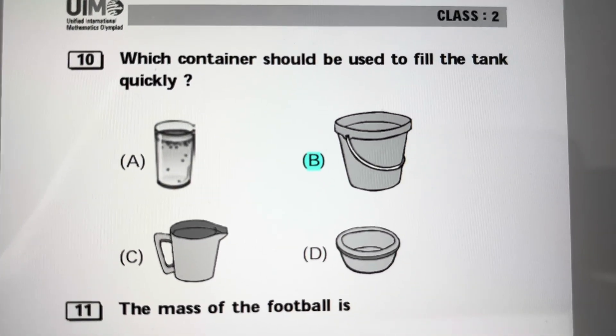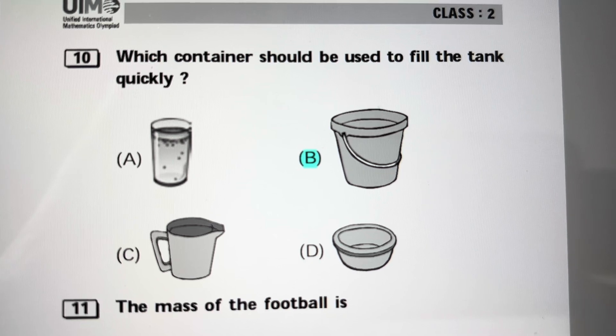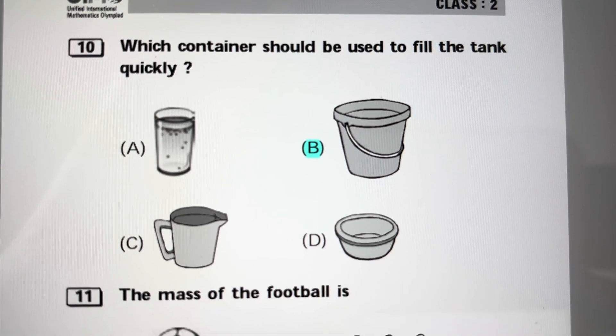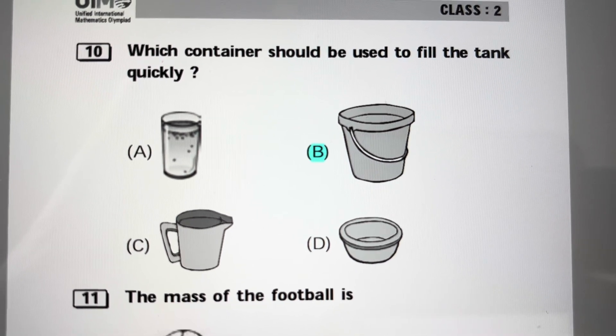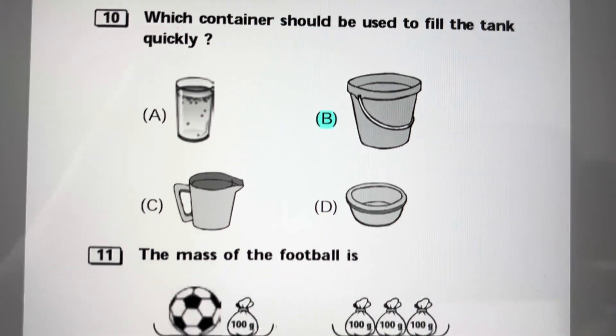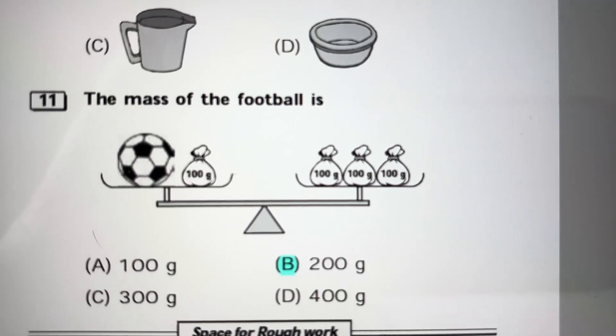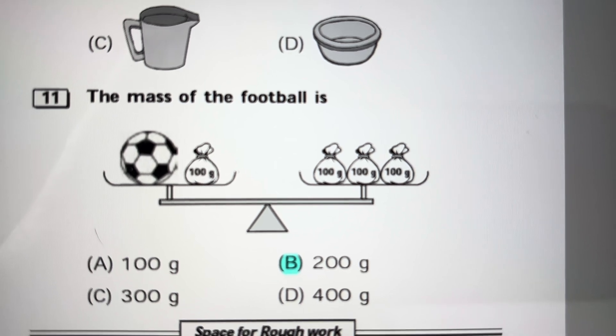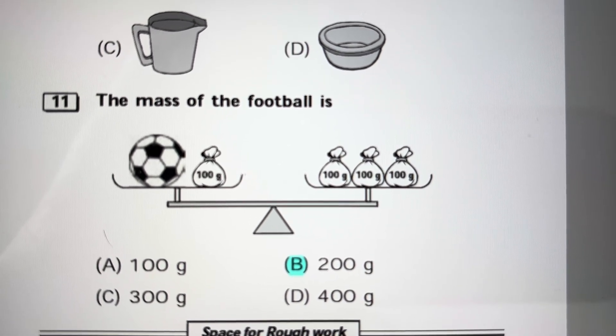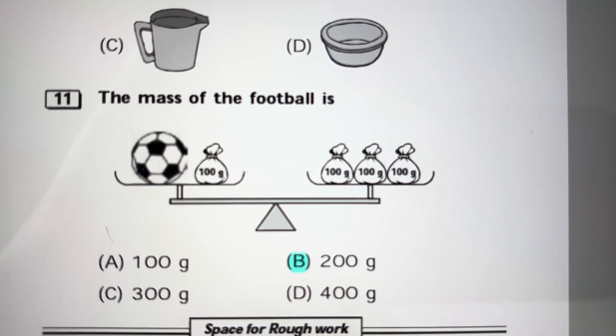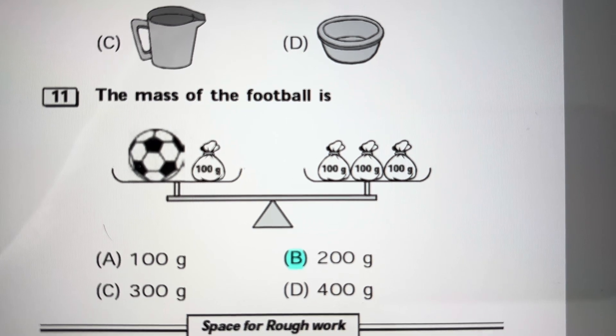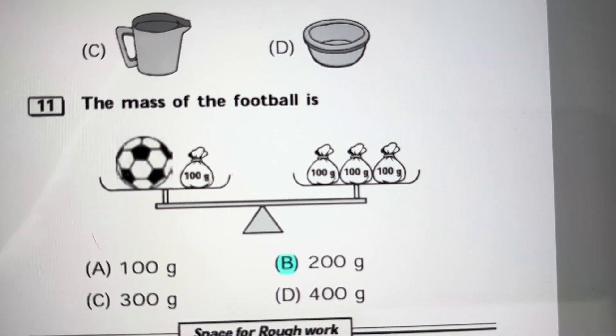Which container should be used to fill the tank quickly? You have to use the biggest container, so you have to use the bucket. Answer is B. The mass of the football: you can cross the 100 gram band from both sides, so the mass of the football is 200 grams. Answer is B.